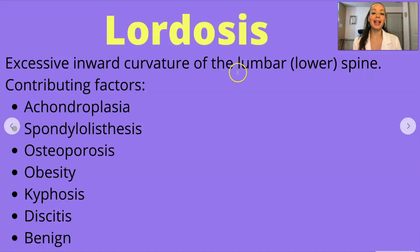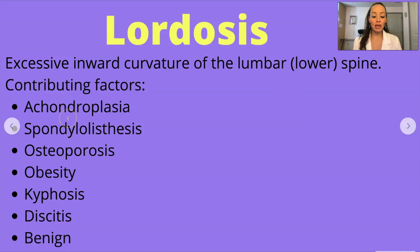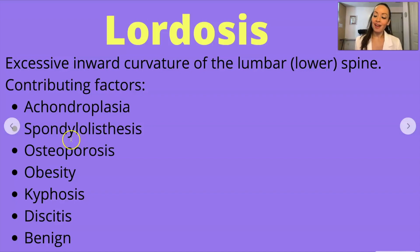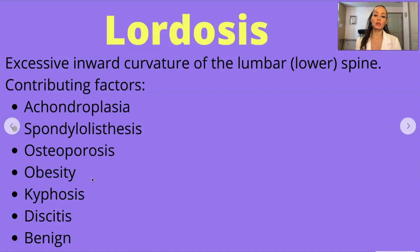Lordosis is an excessive inward curvature of the lumbar spine, or the lower spine. The L in lordosis stands for lower — lumbar, lower spine. Contributing factors include achondroplasia, which is a disorder in which the bones don't grow normally, resulting in short stature associated with dwarfism. Spondylolisthesis is a condition in which a vertebra, usually in the lower back, slips forward.